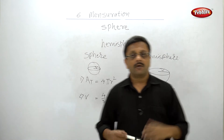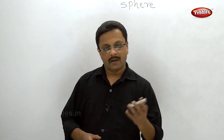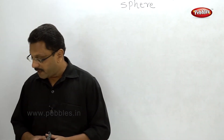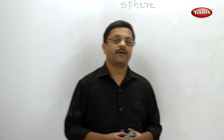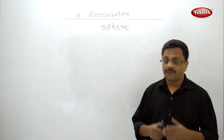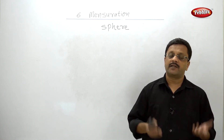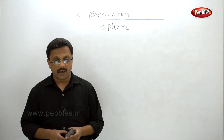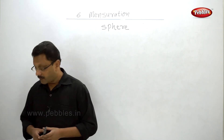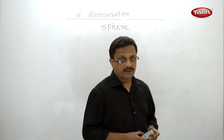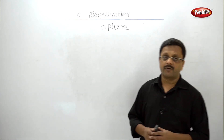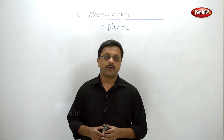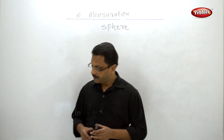Let us see some solved examples. The radius of a sphere is 14 centimeters — find the total surface area and volume of the sphere. In the case of a sphere, total surface area and curved surface area are one and the same. The radius is given and the formulas are known, so this is just a substitution. Don't forget the units: area in cm², volume in cm³.